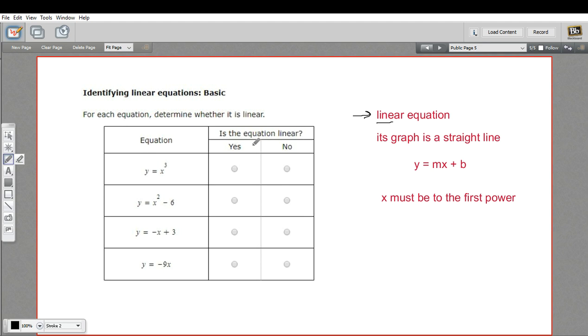All we want to do is say: is this equation linear or is it not? Our first one, we have y equals x cubed, and this breaks that rule that x must be only to the first power. So this is not a linear equation. In fact, when you graph this one it looks like this weird sort of S-shaped curve—definitely not a straight line.